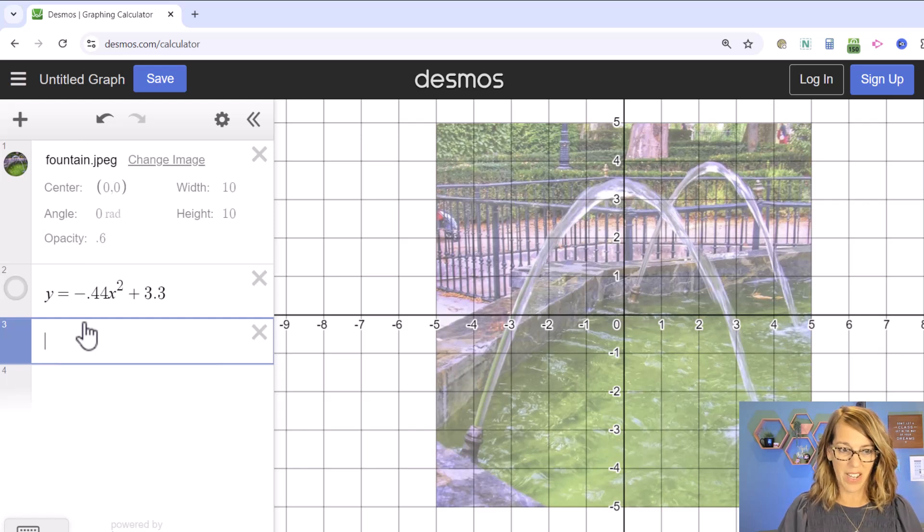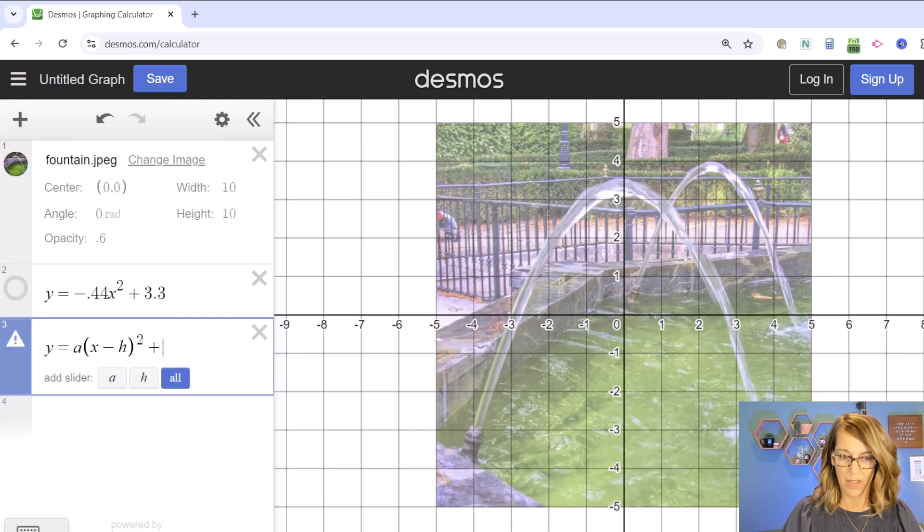I'm going to put my vertex form in, but I'm not going to plug in any of the values for a, h, or k. So y is equal to a parentheses x minus h squared plus k. And then it asks if I want sliders for the a, the h, and the k.